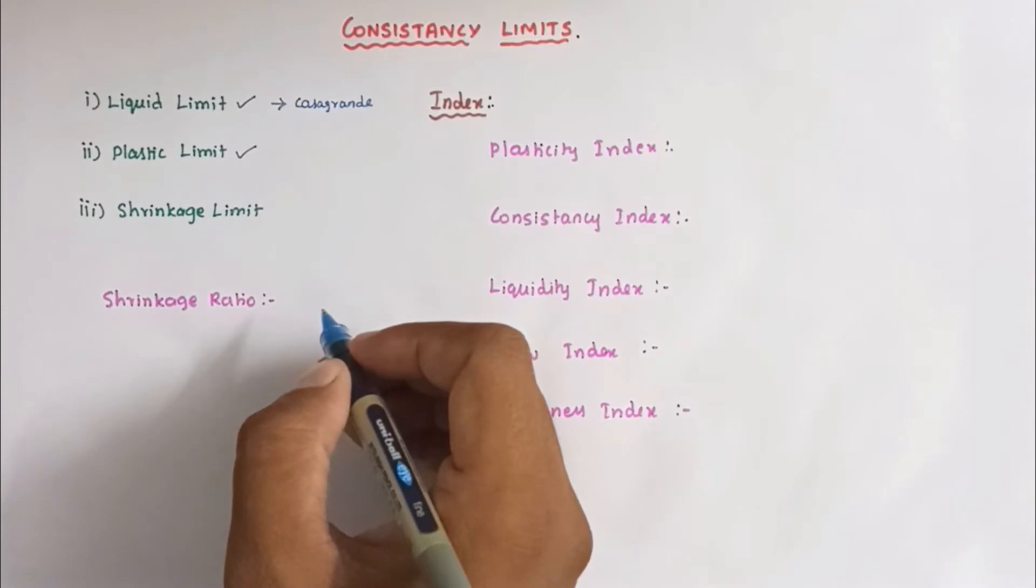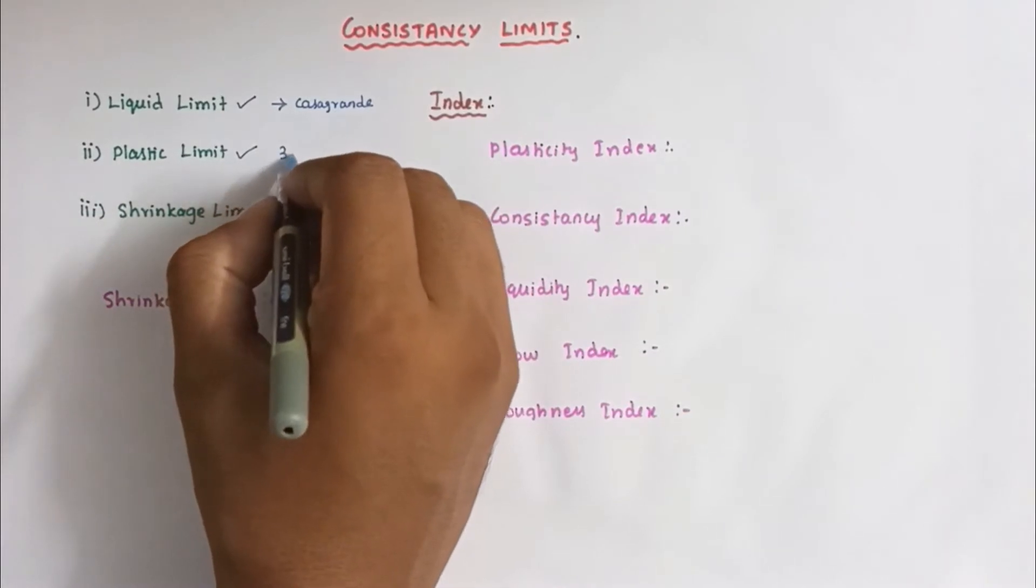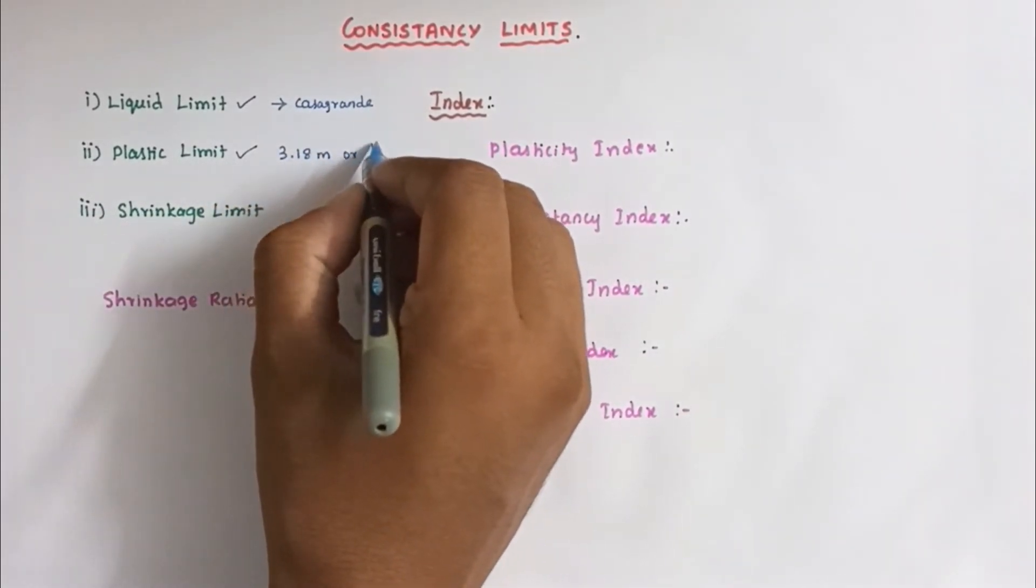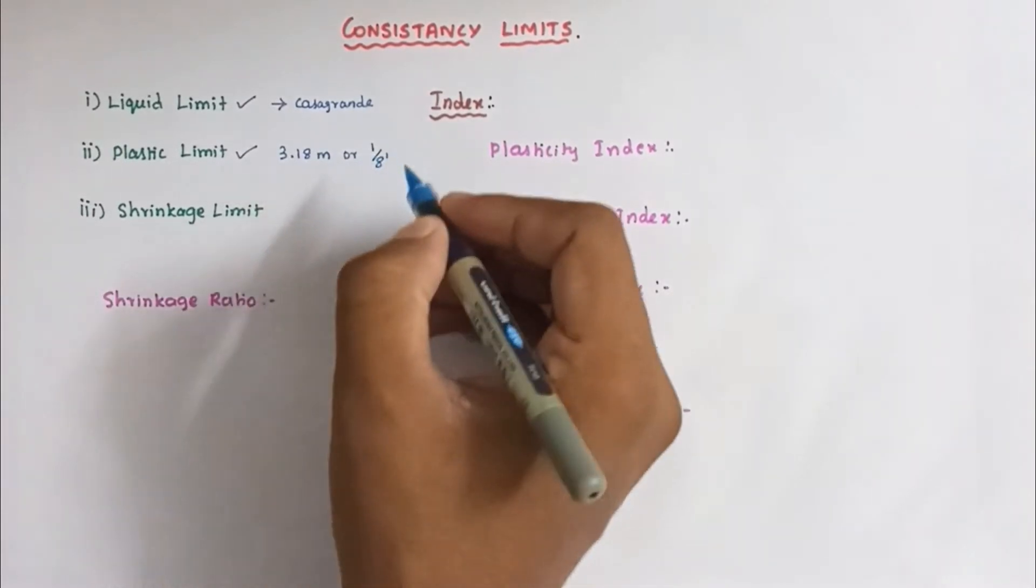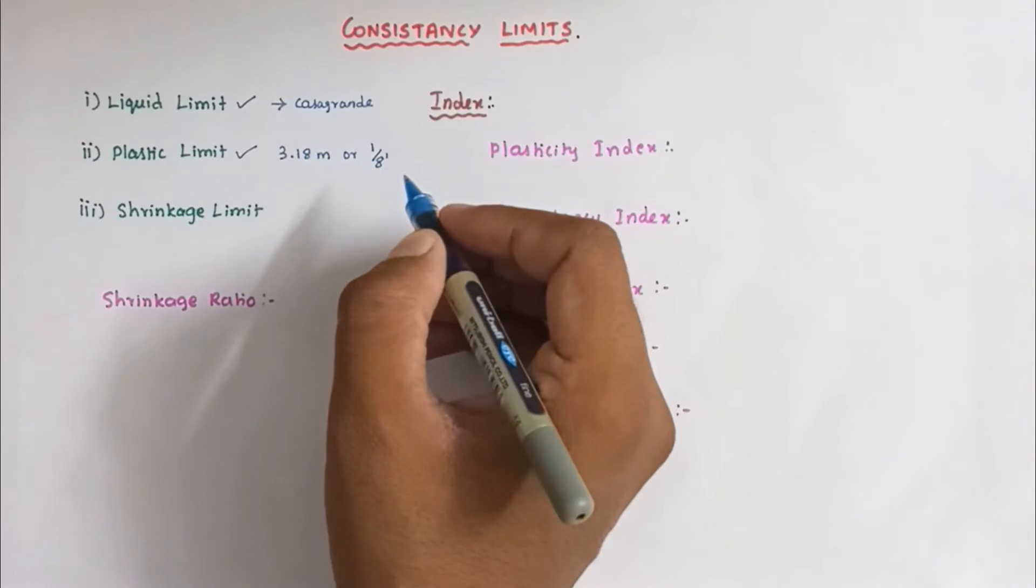Then plastic limit. The plastic limit is the water content below which the soil stops behaving as a plastic material. The plastic limit is determined by rolling a part of soil into a thread. When the thread begins to crumble at the diameter of 3.18 mm or 1/8 inches, the water content at this stage is called plastic limit.